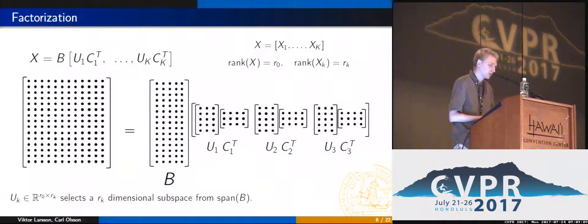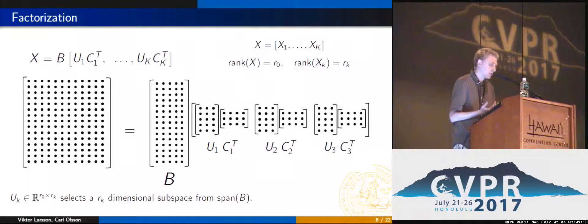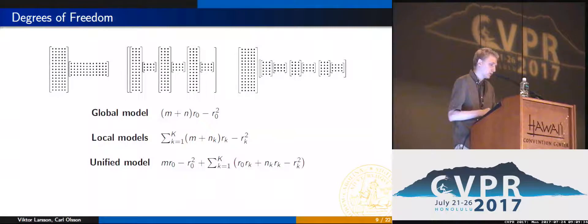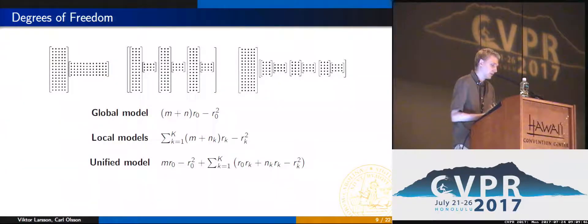This model admits a trilinear factorization — essentially a low-rank factorization where we have further factorized one of the factors blockwise. The leftmost matrix B is the basis for the shared subspace, while the matrices U_K select a smaller dimensional subspace from the span of B, and the matrices C_K are the coefficients in that smaller subspace. Once we have the factorization, we can compute the degrees of freedom for the different models. Under some mild assumptions, the unified model will have fewer degrees of freedom than both the global and local models, since it is a more constrained version of either.